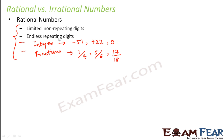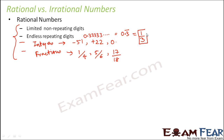When you talk about endless repeating digits, for example 0.33333 where it keeps on repeating — we write it as 0.3̄, meaning 3 is going to be repeating continuously. This can be represented as 1/3. So 1/3 is basically 0.33333 endlessly, and this is a rational number. So wherever you have endlessly repeating digits of the same digit, that decimal can be denoted by a rational number.